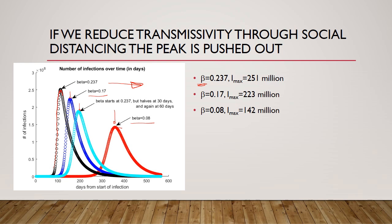This curve starts with a beta of 0.237, but we implement social distancing 30 days in to decrease the transmissivity by half, and then decrease it by half again in another month through even more severe quarantining and social distancing. What that does is push the peak to the right and drive the peak down. Social distancing works — this is why we are doing it.